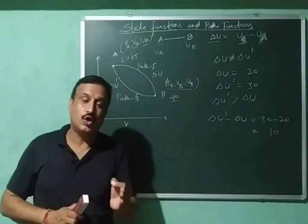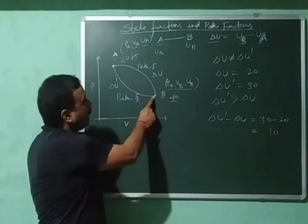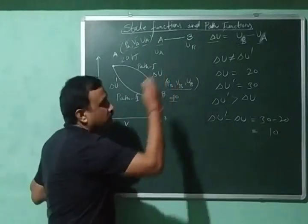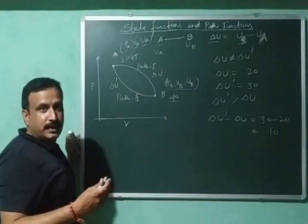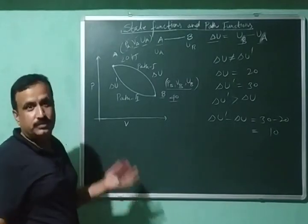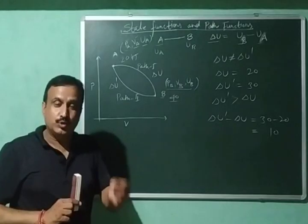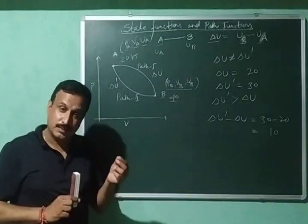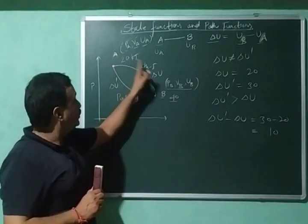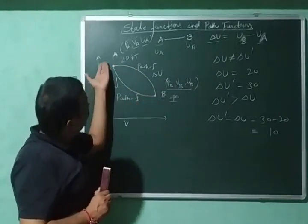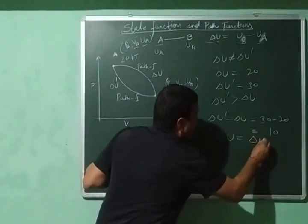This is against the first law of thermodynamics. I will convert A into B consuming 20 kJ of energy, and when I come back from B to A, I get 30 kJ — a net profit of 10 kJ, meaning energy is being created. Energy cannot be created. If I absorb 20 kJ during this process, an equal amount of 20 kJ should be released. This proves that delta U must equal delta U prime.